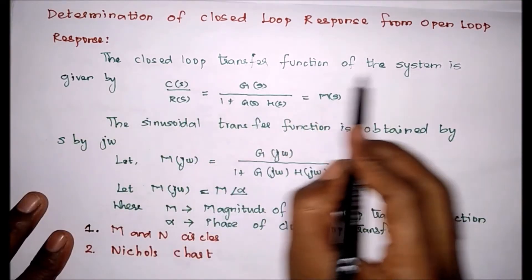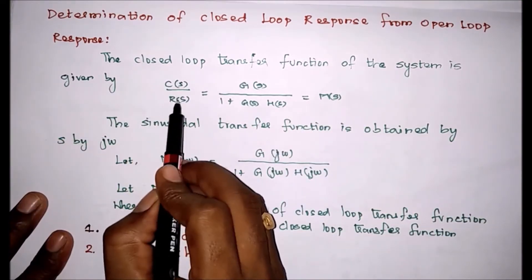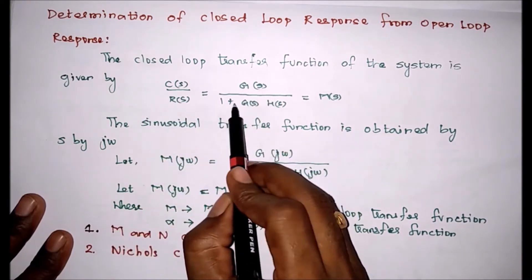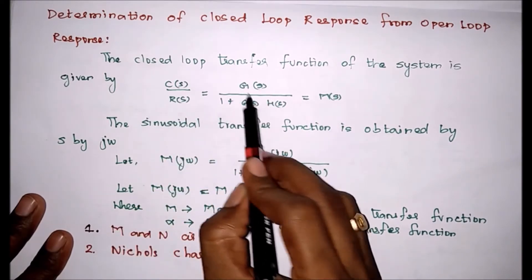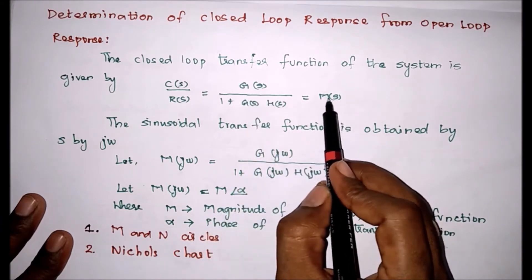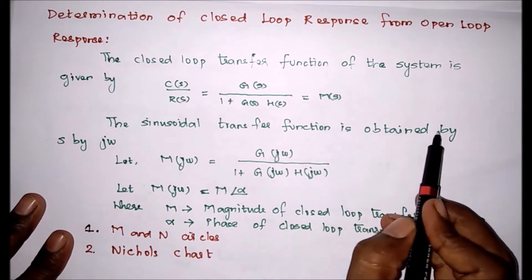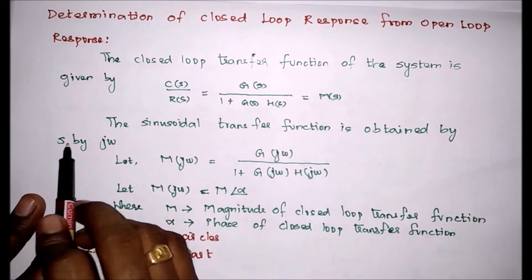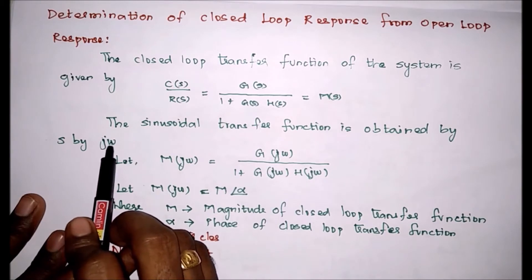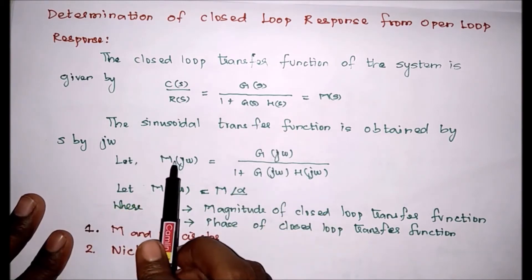The closed loop transfer function of a system is given by C of S equal to G of S divided by 1 plus G of S into H of S. We can say it is a transfer function, so transfer function equal to M of S.